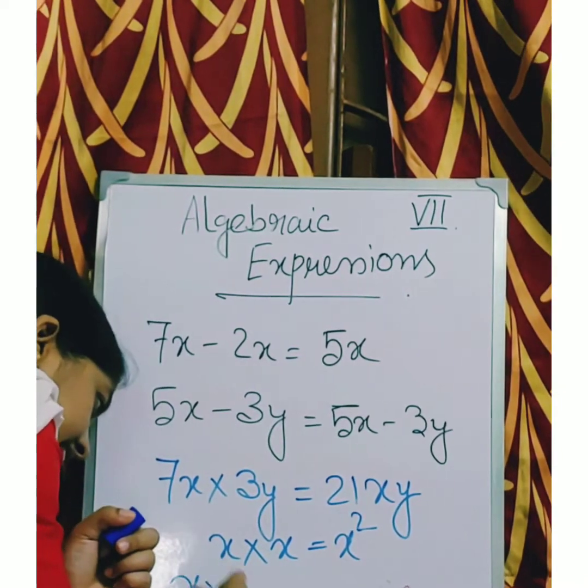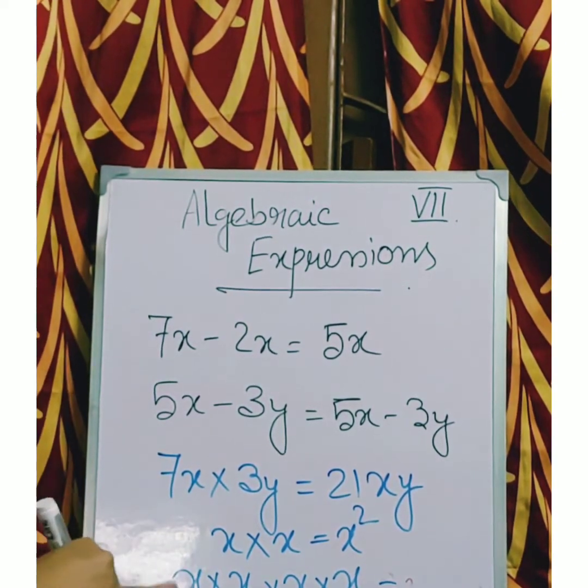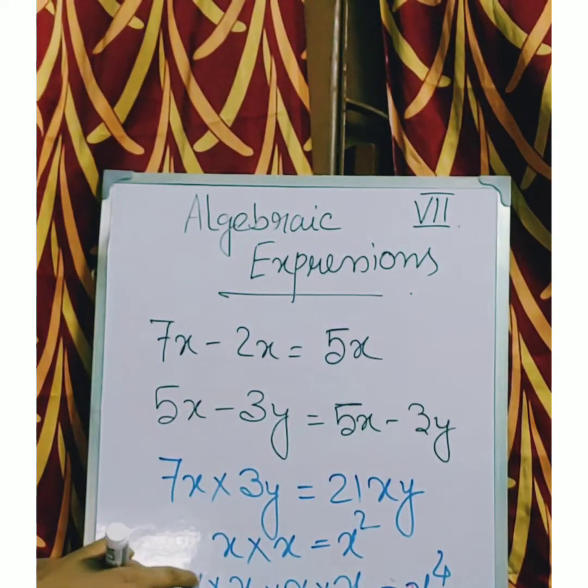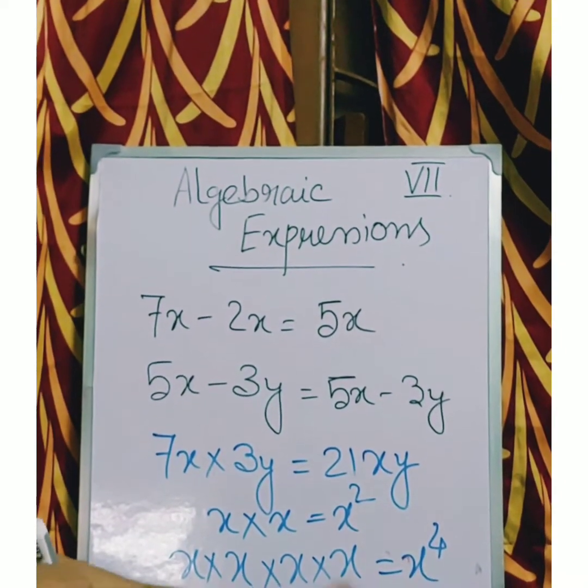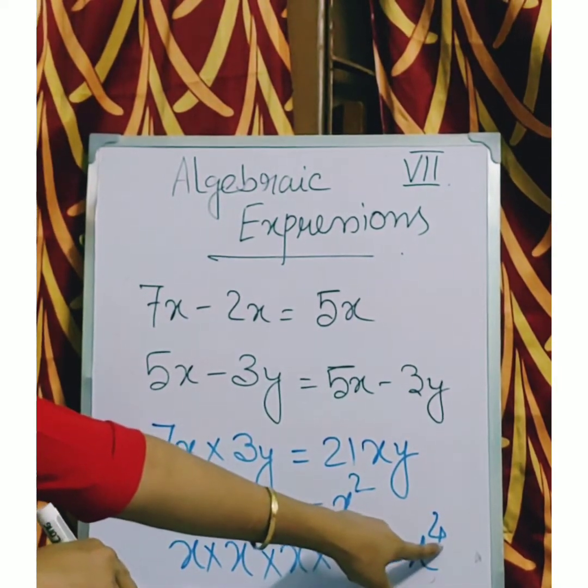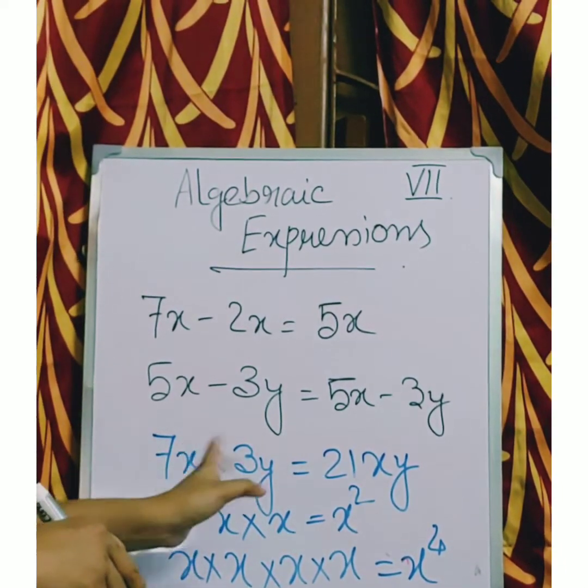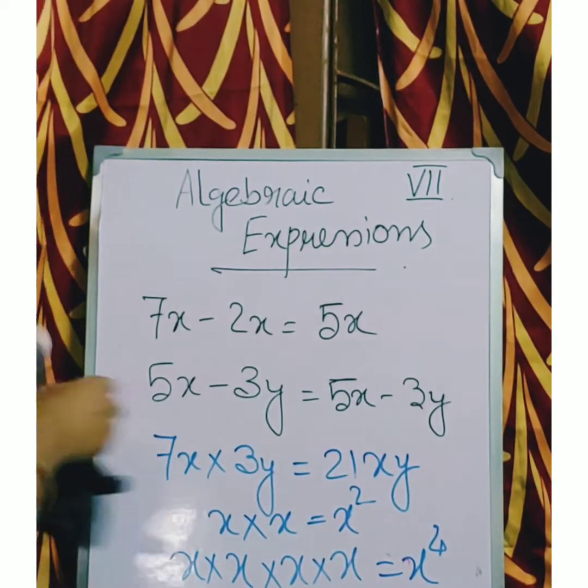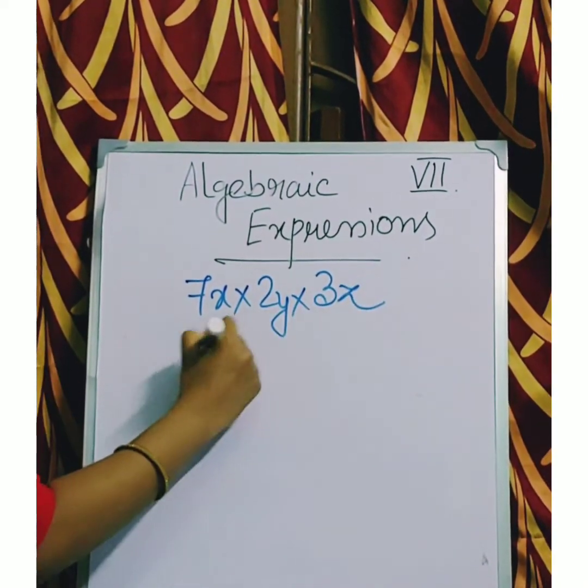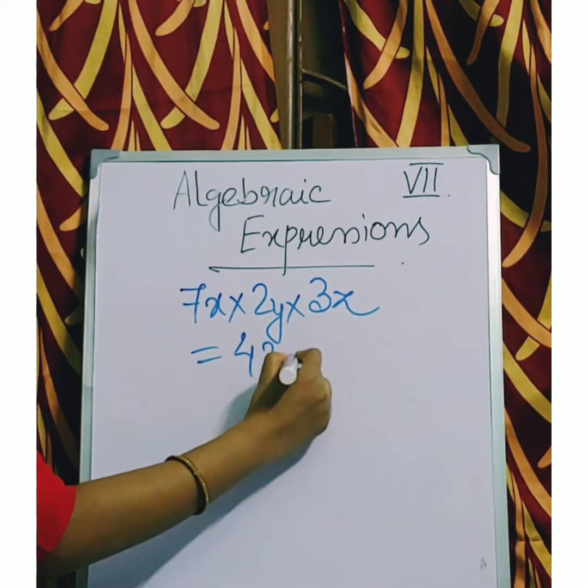Suppose x into x into x into x. What we will write? How many x we are multiplying? 4. So the power will be x to the power 4. So when the variables are same, we can write the number of variables we are multiplying in the power. That means we can multiply. But when the variables are different we will write it in this way. If 7x times 2y times 3z, what will be the answer? 7 2's are 14. 3 14's are 42. xyz.